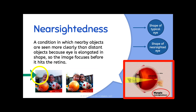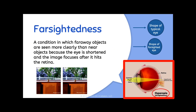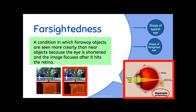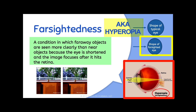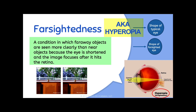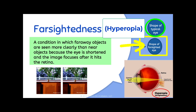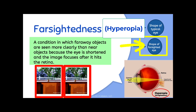If nearsighted means you can only see objects that are nearby, then the other type is farsightedness — its complete opposite. A person who is farsighted can see objects that are far away but has trouble with close-up activities like reading. It's because the eye is shortened — this is called hyperopia. So myopia is nearsightedness and hyperopia is farsightedness. A farsighted eye is taller than it is wide, and the image is projected to focus behind the retina, making nearby objects blurry.